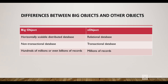Big objects use a horizontally scalable distributed system, whereas standard objects use a relational database. Standard and custom objects are based on relational databases — data stored in rows and columns with a primary key, using normalization. Non-relational databases, used by big objects, are ideal for storing millions of records like video files or text files that don't have a strict structure, and they are easily scalable.